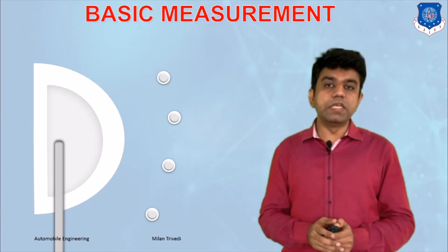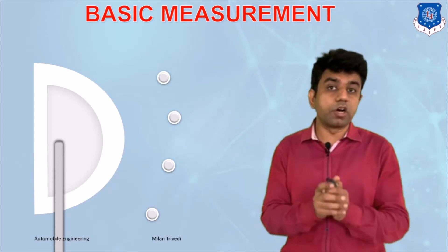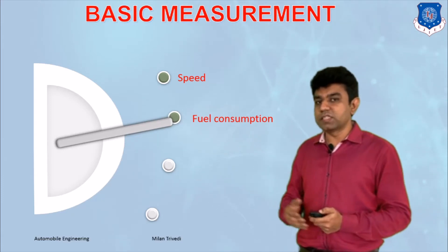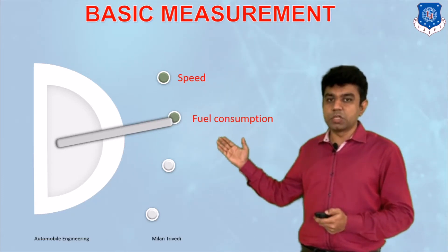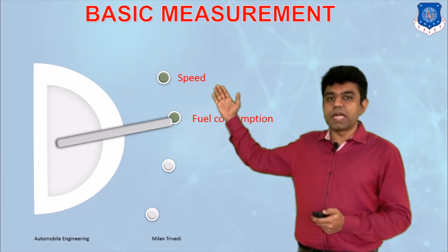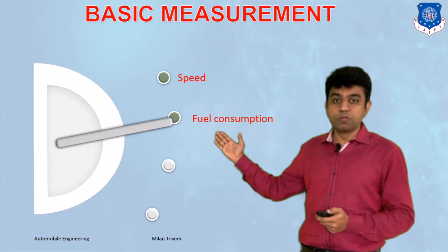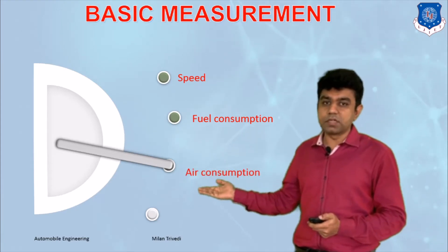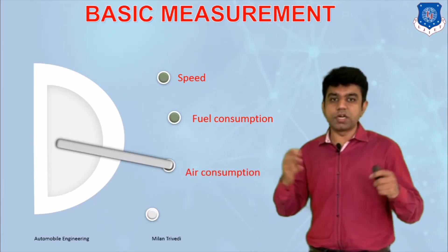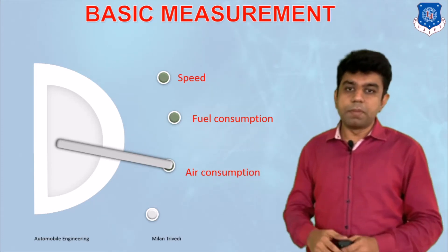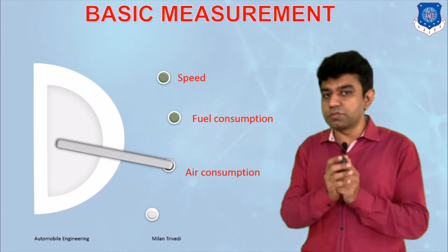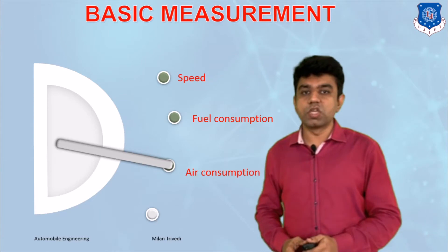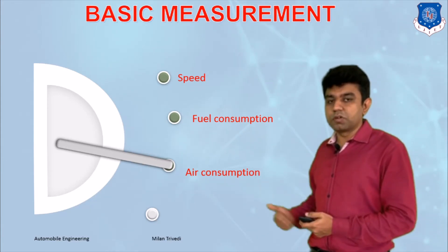Let me introduce the basic measurements we normally perform in engine testing. The first is speed measurement, which can be easily measured with different kinds of tachometers. The second is fuel consumption, for which we have two different methods. The third is air consumption measurement, which is a critical and difficult parameter to measure, but nowadays an airbox method gives accurate values of air intake — which has a huge effect since the air-fuel ratio depends on it.